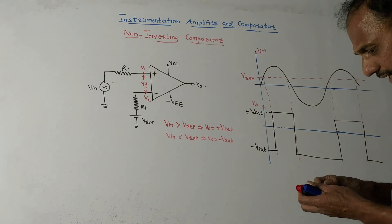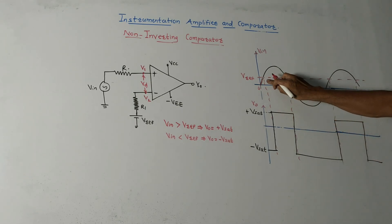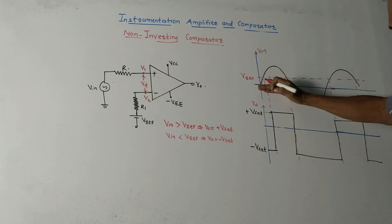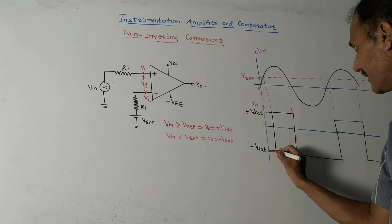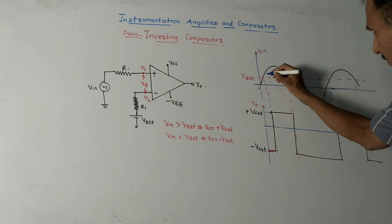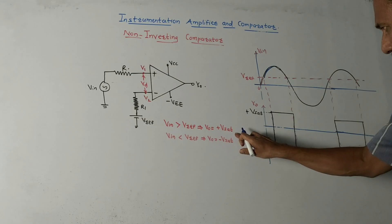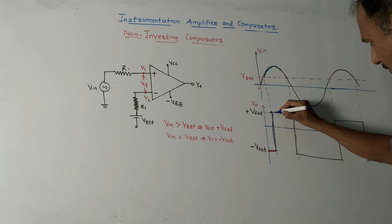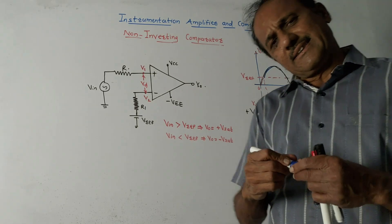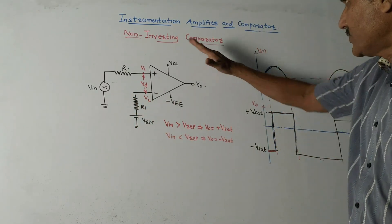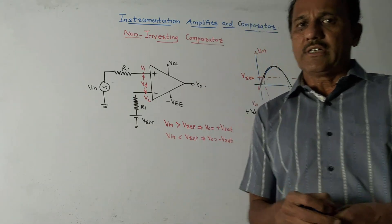Looking at the waveform for the non-inverting comparator: when VIN is less than VREF, the output is −VSAT; when VIN is greater than VREF, the output is +VSAT. The waveform is the exact opposite of that of the inverting comparator. That's it for today's session — thank you for watching.